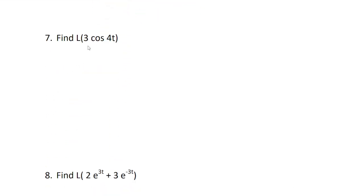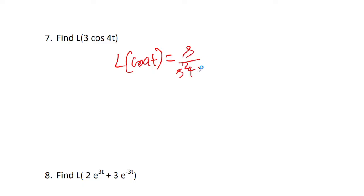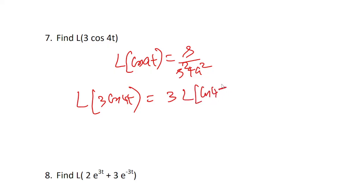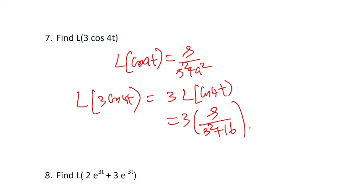Laplace transform of cos: the formula is L{cos(at)} = s/(s² + a²), and L{sin(at)} = a/(s² + a²). For example, L{3·cos(4t)}: using the formula, cos(4t) gives s/(s² + 16), since 4² = 16. So the answer is 3s/(s² + 16). Very simple.